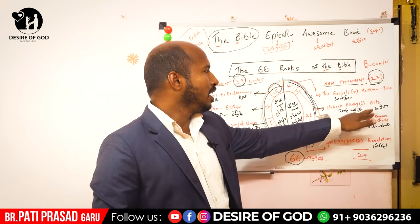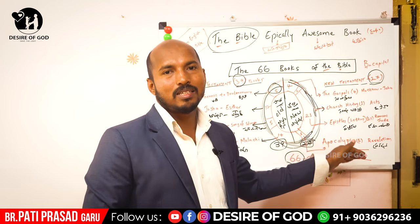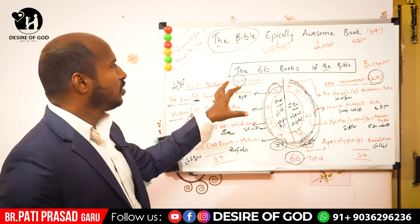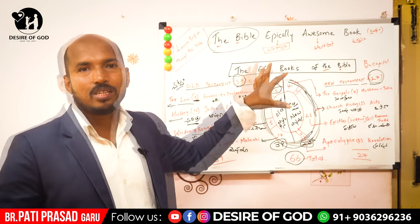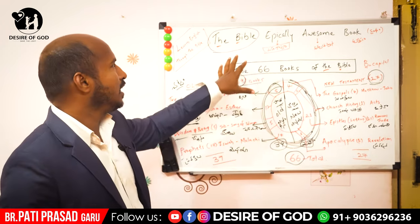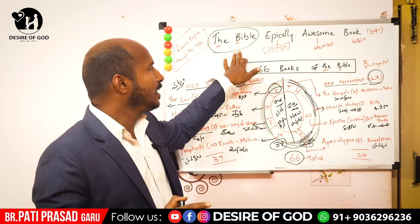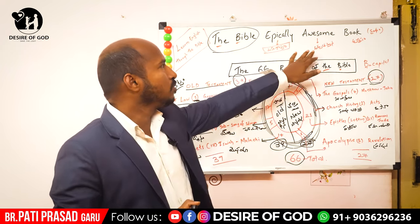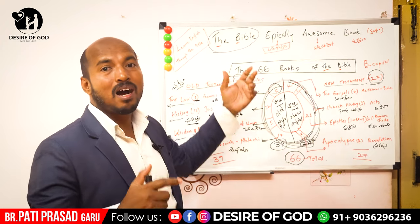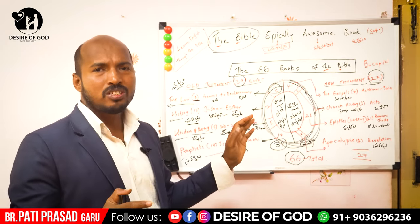So: 4 Gospels plus 1 Acts plus 21 Epistles plus 1 Revelation — all together 27 books. Today we are also going to explain what are the key Biblical English words. The awesome book is Adbuthamena Pustakamu, and Epic means Maha Kavya.